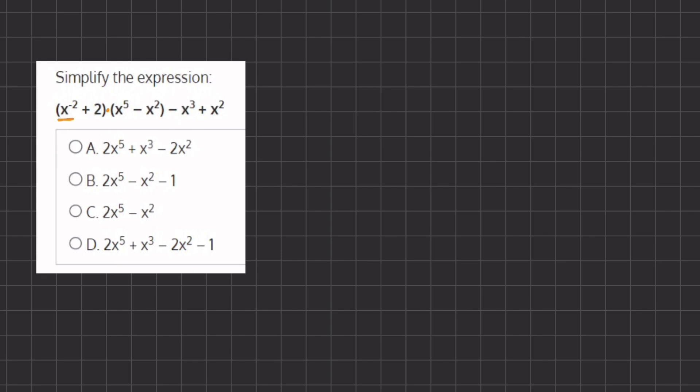So we have x to the power of 2 times x to the power of 5. We're going to take this first term and multiply by the two terms in our second parentheses. So when we have the same base with different exponents, we are going to be adding those exponents together. So we have x to the power of negative 2 times x to the power of 5. And if we add the exponents, we get x to the power of positive 3.